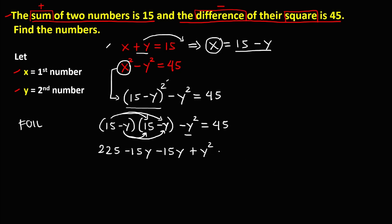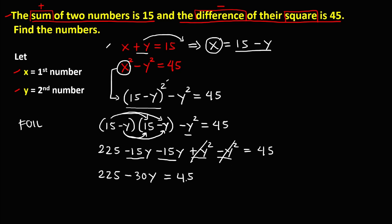Bringing down the negative y squared and setting equal to 45, we combine like terms. We have 225, then negative 15y and negative 15y combine to give negative 30y, and positive y squared and negative y squared cancel out to zero. So the equation simplifies to 225 minus 30y equals 45.